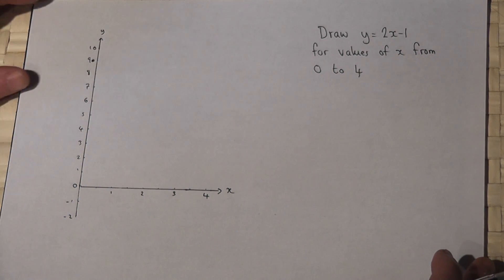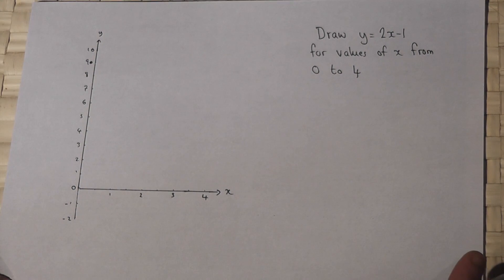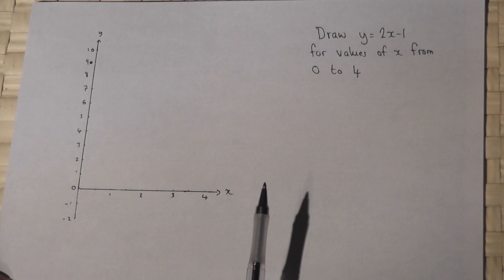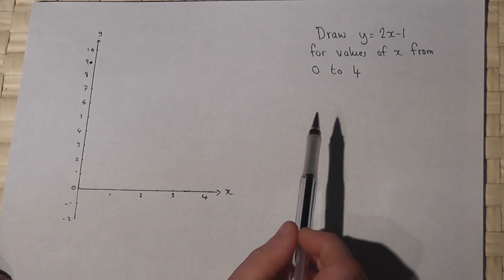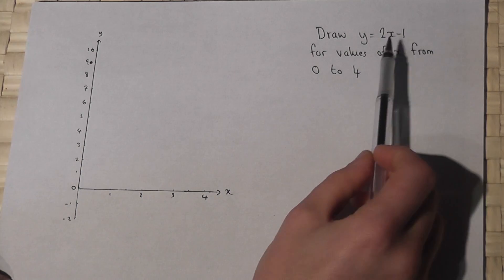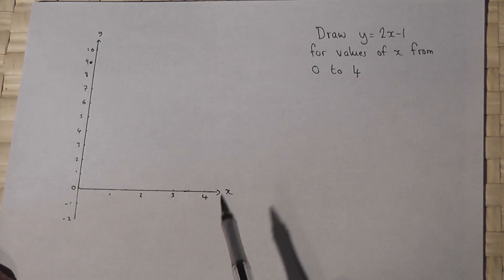This video reviews how to draw a line given an equation, in this case y equals 2x minus 1. And we want to draw this line between the values of 0 and 4 on the x-axis.